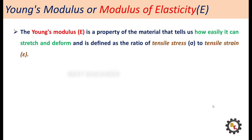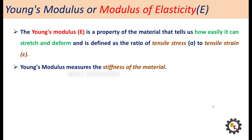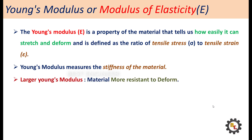First, Young's modulus, or modulus of elasticity, is denoted by capital letter E. Young's modulus E is a property of the material that tells us how easily it can stretch and deform. It is defined as the ratio between the longitudinal stress to longitudinal strain. Young's modulus measures the stiffness of the material. If a material has a larger Young's modulus, it will offer more resistance to deformation.